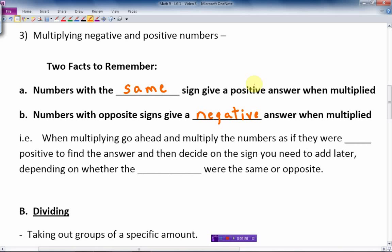So when multiplying, what we do is we go ahead and multiply the numbers as if they were both positive. Take the two numbers, multiply them as if they're both positive. And then you decide on the sign you need to add later, and it depends on whether the signs were the same or whether the signs were opposite, whether they're different.